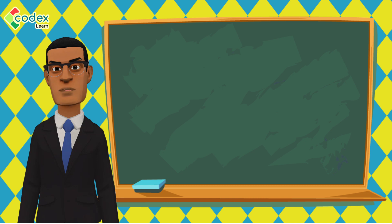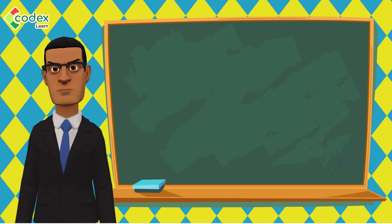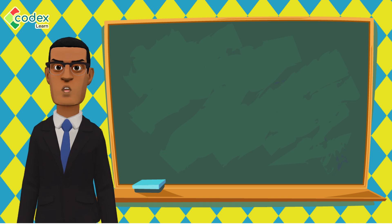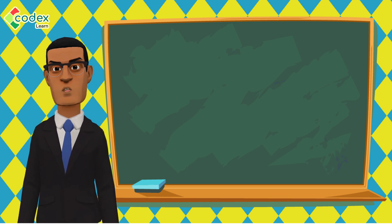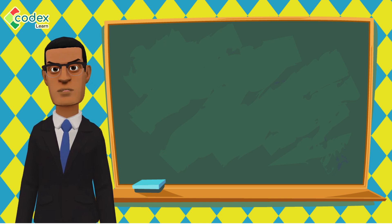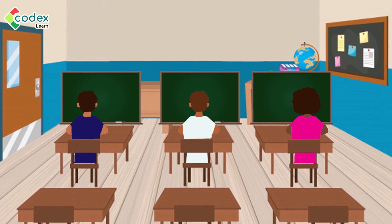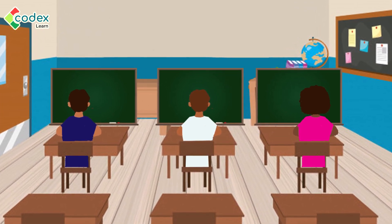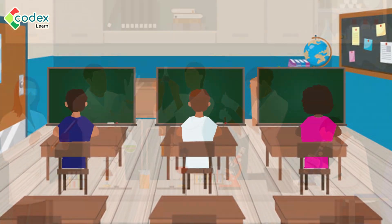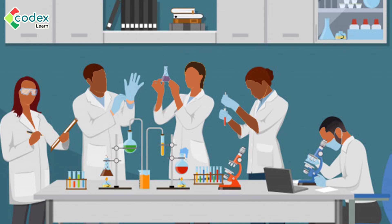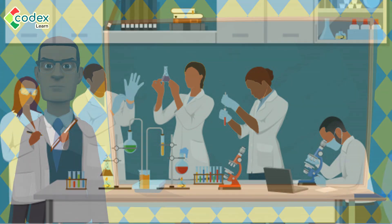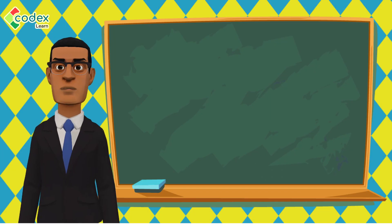When we explore our environment, we can also tell when something is not in its rightful place. If you come into the classroom and find a board on your desk, you would know that is not its rightful place — because the board hangs in front of the classroom, not on your desk. Scientists who explore the environment are called environmental scientists.